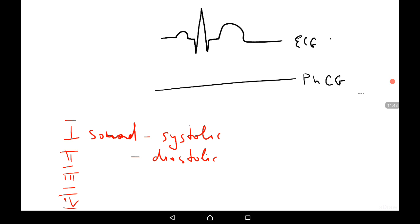The first sound is the loudest sound on the phonocardiogram and occurs just after the R wave, following depolarization of the ventricles — since depolarization precedes contraction. The second sound, diastolic, is explained primarily by the closure of the semilunar valves. They close during the diastole when the blood has been ejected into the aorta and pulmonary trunk and the pressure in those vessels exceeds that in the ventricle, causing the valves to close.